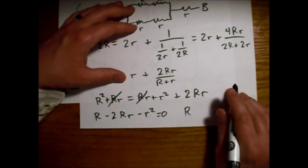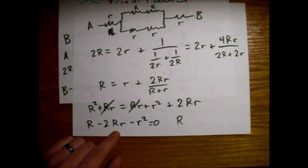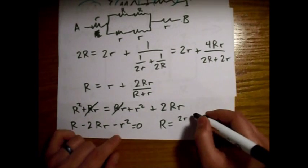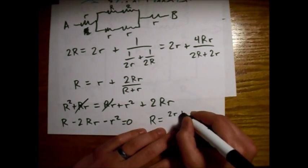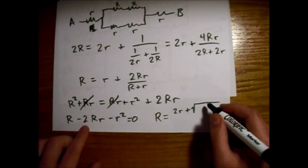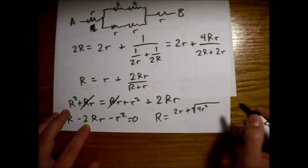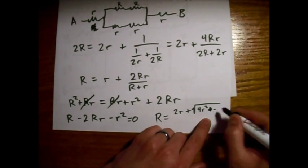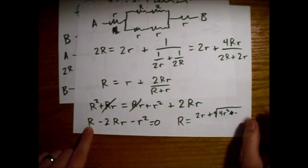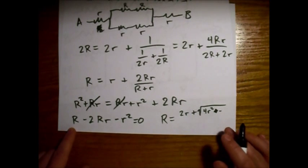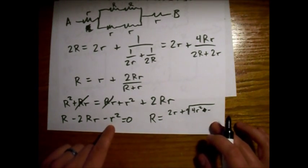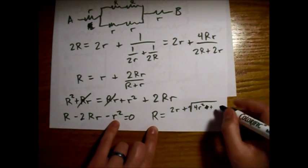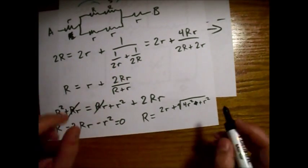We take negative B, which is 2r, and take the positive root because resistance isn't negative. Under the square root we have B squared: 4r² plus 4 times 1 times r², all over 2. That gives us r times the square root of 5 in the numerator.